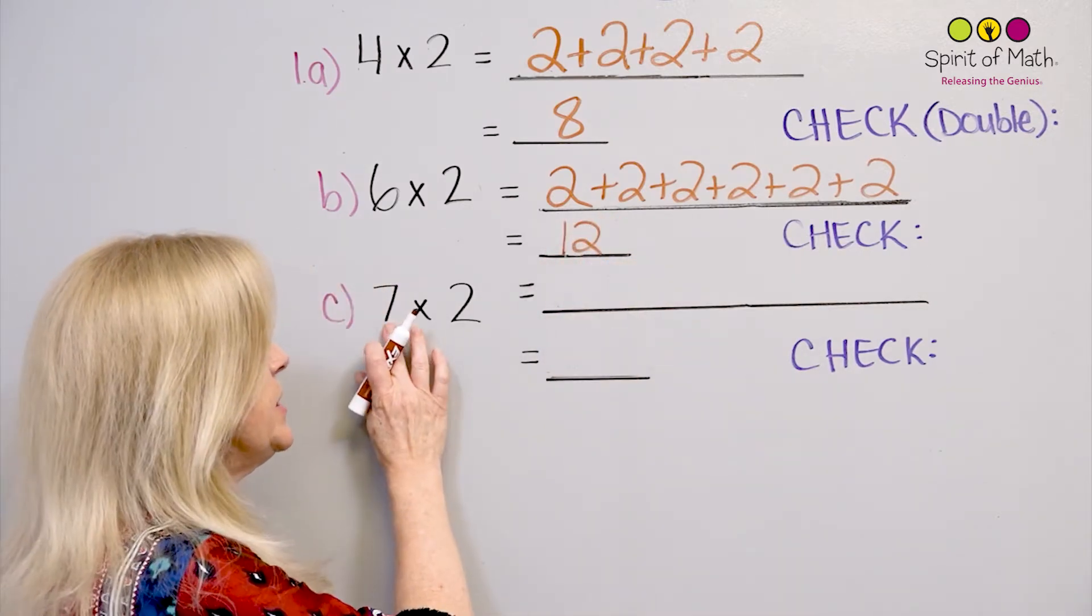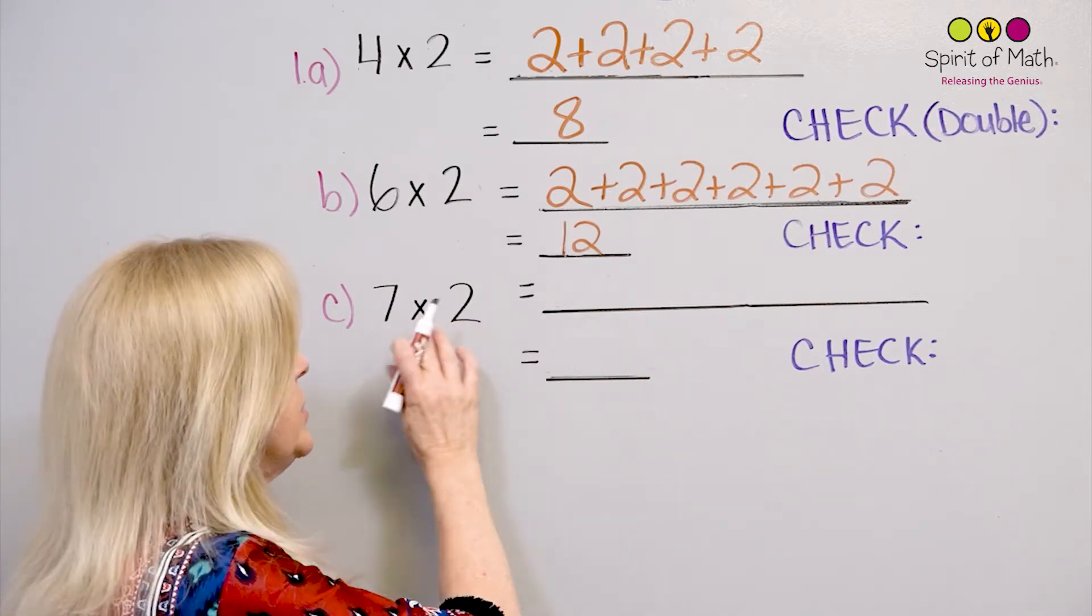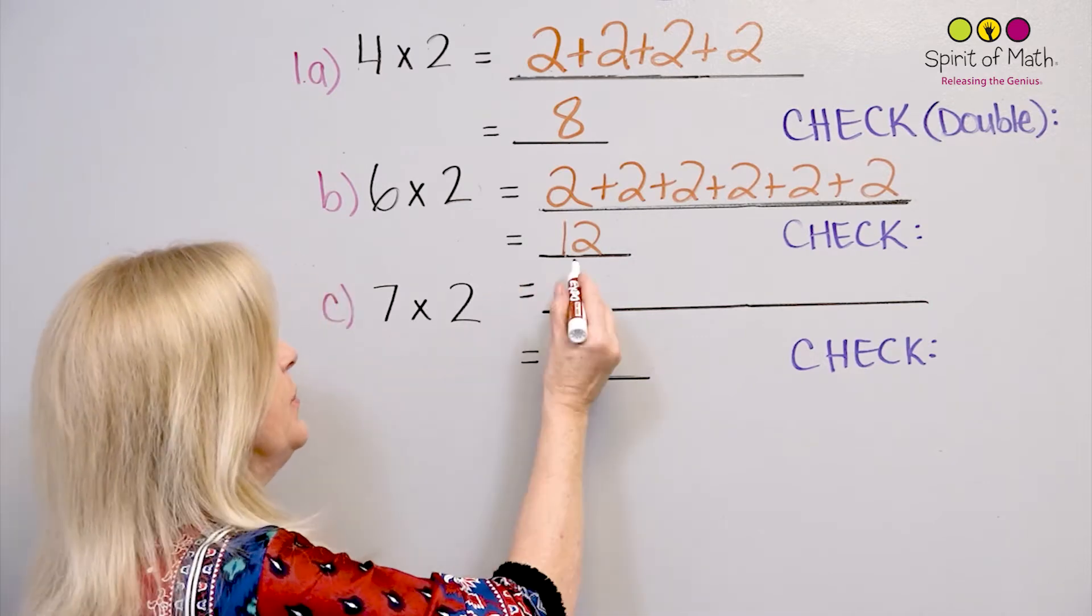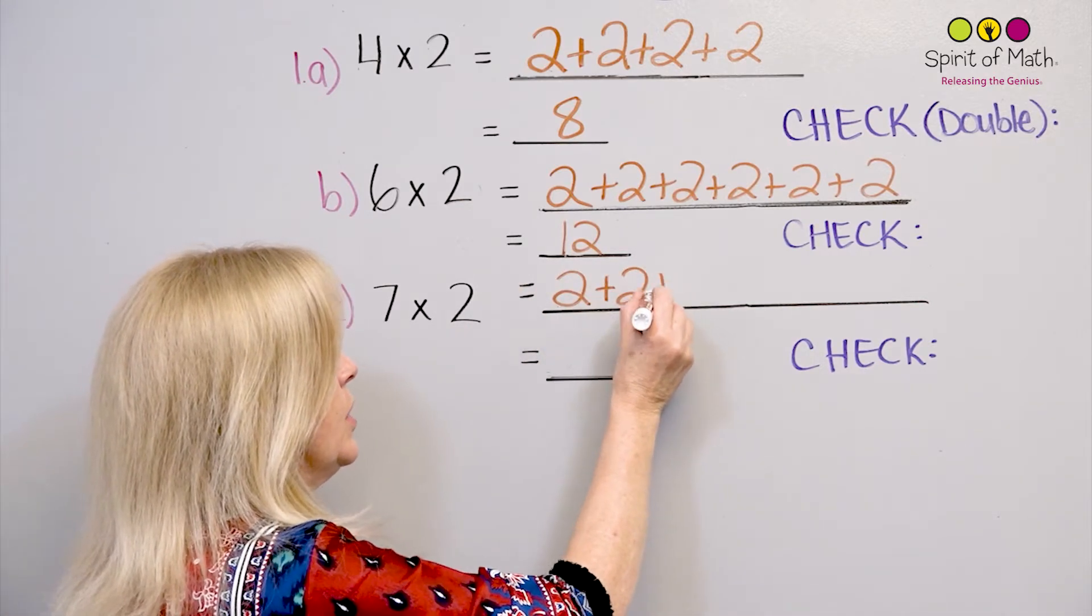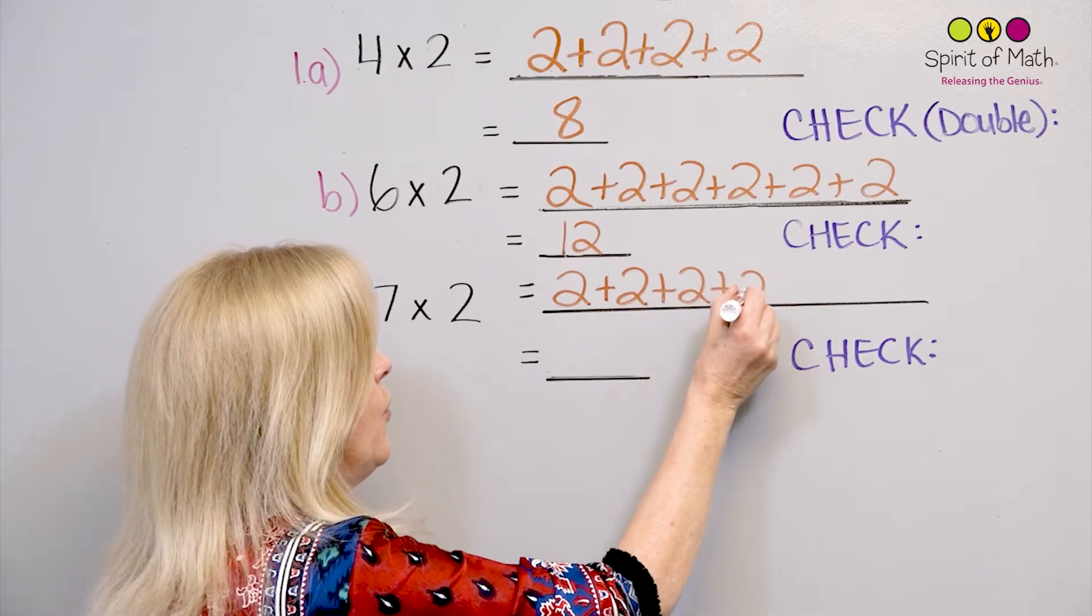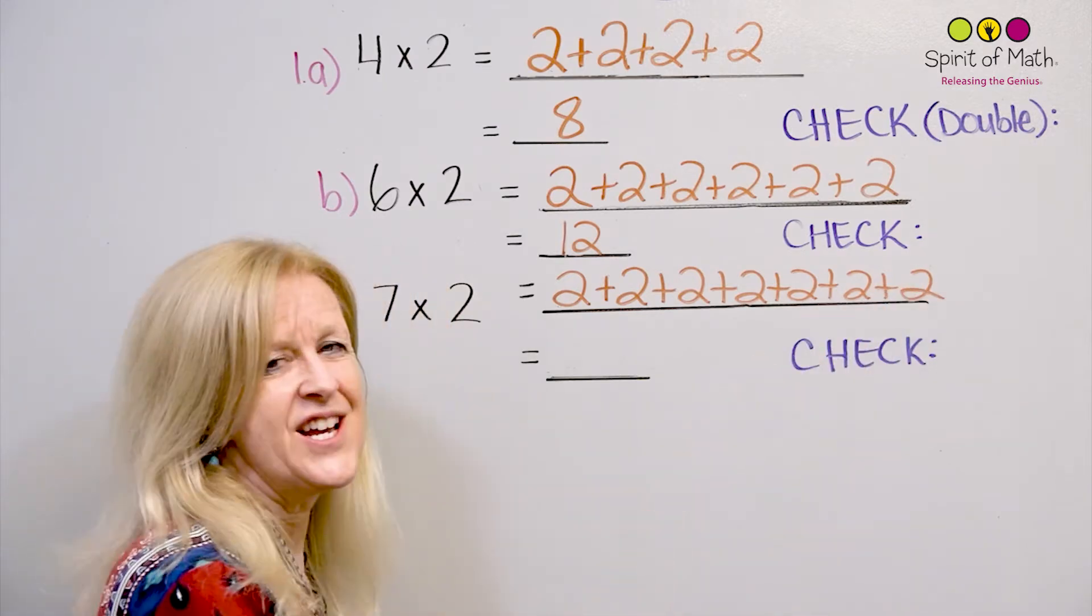Let's do now the next one, 7 groups of 2. So that means you need 2, 7 times. Okay? So 7 groups of 2. All right. So 2, 1, 2, 3, 4, 5, 6, and 7. Just in time.